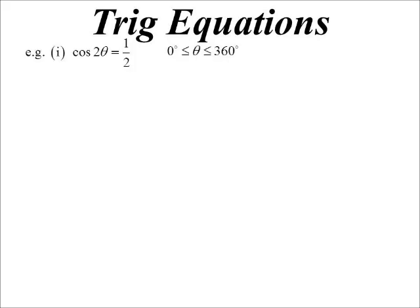So previously we would have got a question like this, cos 2 theta is a half, standard sort of question, and we would have said, well if theta goes between 0 and 360, I know 2 theta will go between 0 and 720.